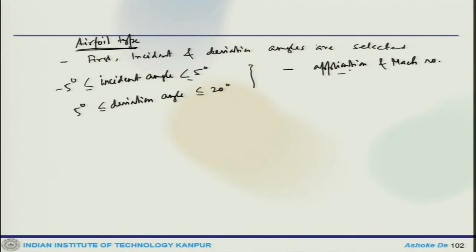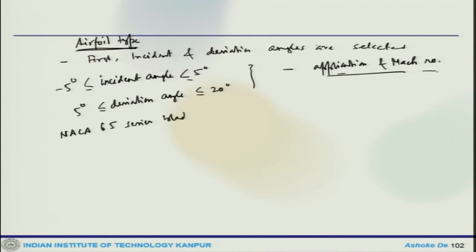In the transonic or supersonic range, shock waves will impose loading on the frontal stages. The typical series used is the NACA 65 series blades. There is also a British series called the C series, both used in compressors. After aerofoil selection, the important part is the compressor map or performance characteristics curve.